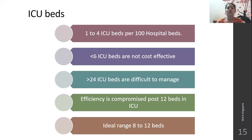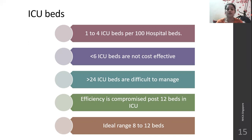For ICU beds, 1 to 4 ICU beds per 100 hospital beds is ideal. If it is more than 6 ICU beds, it is not cost effective. If more than 24 ICU beds are available in a hospital, they are difficult to manage. Efficiency is compromised after you increase the bed size beyond 12 beds. So the ideal range for ICU beds is 8 to 12 beds.